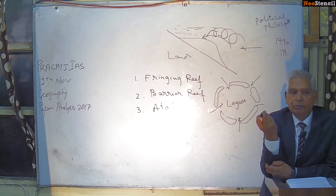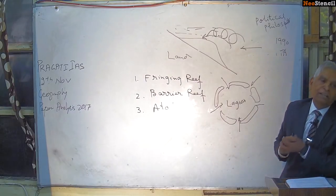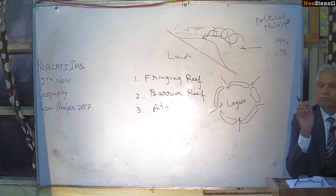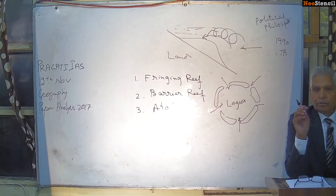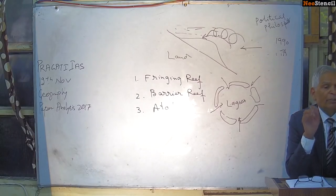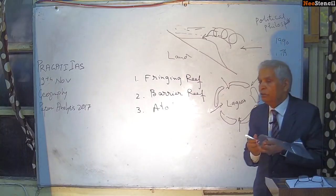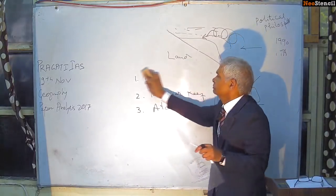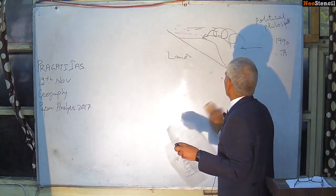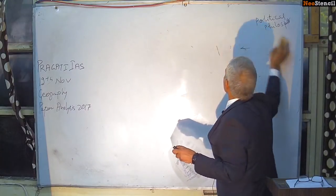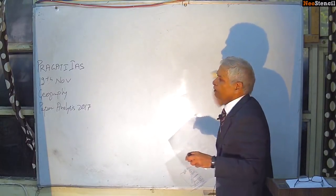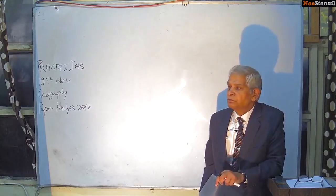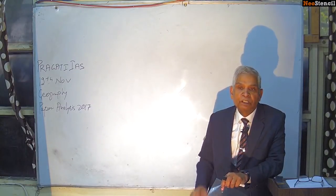If you use two or three diagrams and write a little bit, it is very easy. If you look at the world, some coasts are low energy coasts. You can note down the Gulf of Mexico, the Persian Gulf, the Yellow Sea, the Baltic Sea, and the Bay of Hudson — they are all low energy coasts.